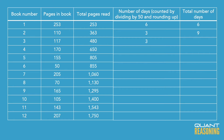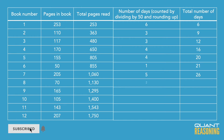Same goes for the third book — 50 goes into 117 twice, with a remainder of 17. And if you just keep going through each book and divide the number of pages that book has by 50, and then round up to the nearest integer if it's not already an integer, you can just add all those numbers up.